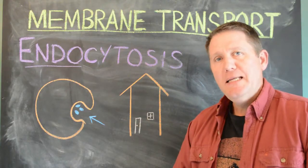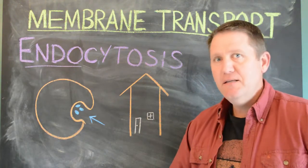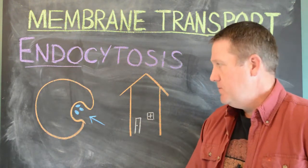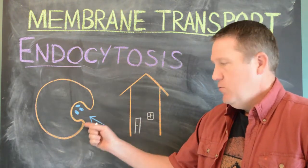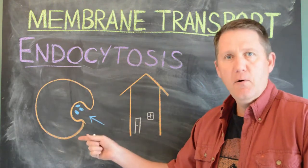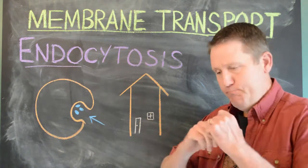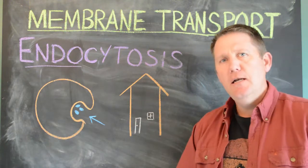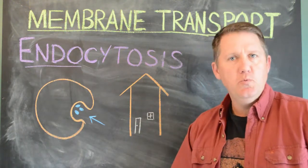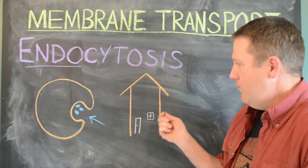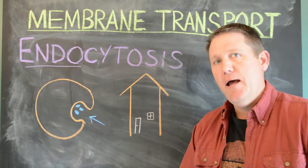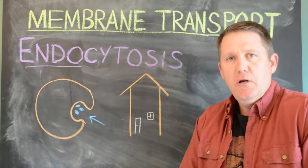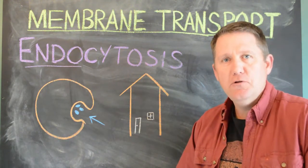The reason we need endocytosis is basically the same as the reason for exocytosis: if you were to make a big hole in the membrane, then everything else could come in. Back to the house analogy — if you have a big object that you want to get into your house, for example, your car, how do you get a car into a house?